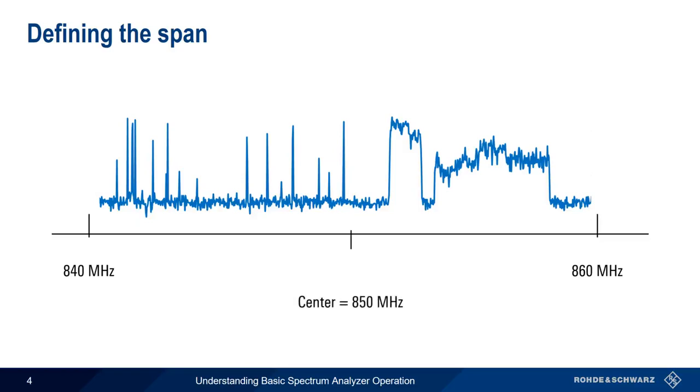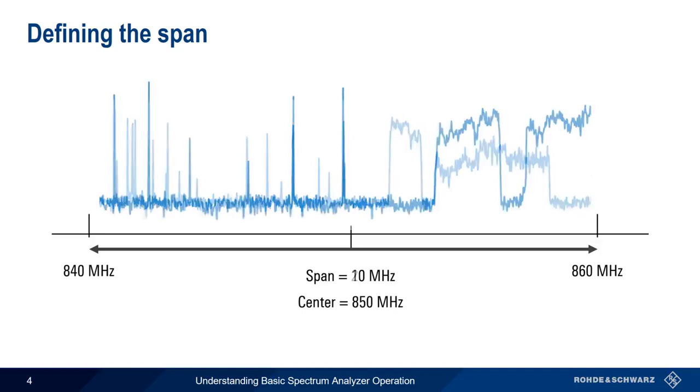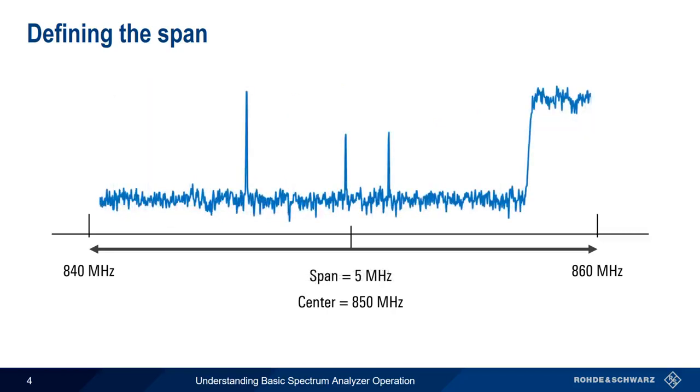The names are fairly self-explanatory. Center is the center frequency in the middle of the display, and span is the width of the display. The range 840 to 860 megahertz is the same as a center of 850 megahertz and a span of 20 megahertz. Most often we know the center frequency of our signal of interest, and using span it's easier to zoom in and zoom out, just increase or decrease the span.